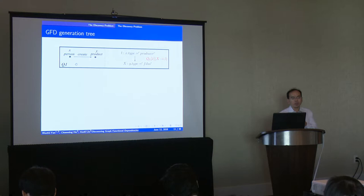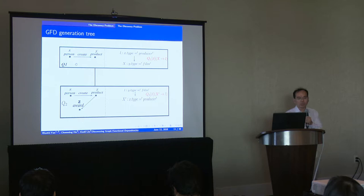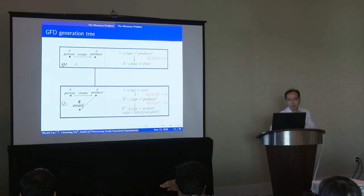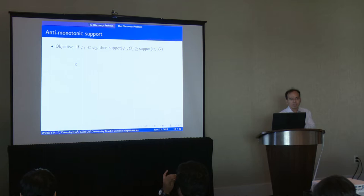Now we start from the GFD generation tree. A node consists of two parts: the first part is the pattern and the second part is the tree of the literals. Then the tree will vertically extend the pattern by adding one edge and horizontally extend the tree of the literals by adding one literal to the X.